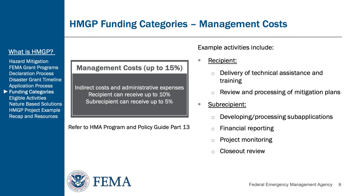Under the management costs category, management costs are indirect costs and administrative expenses reasonably incurred by a recipient or sub-recipient in administering an award or sub-award. Recipients are eligible to receive up to 10% of the HMGP ceiling amount, and sub-recipients up to 5% of their grant award for management costs. Example activities include, for the recipient: delivery of technical assistance and training, or review and processing of mitigation plans. For the sub-recipient: developing or processing sub-applications, financial reporting, project monitoring, and closeout review. Management costs may be incurred as pre-award costs. Applicants should refer to the 2023 HMA Program and Policy Guide Part 13 for additional information.